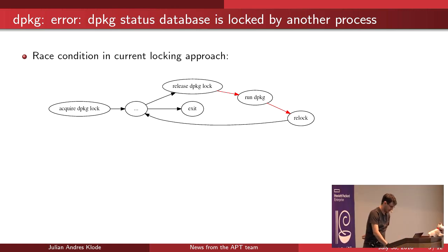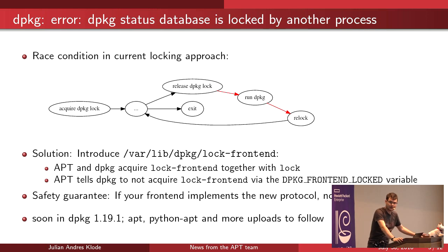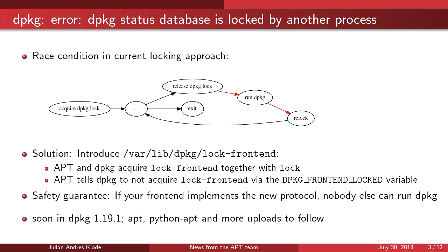The solution is to introduce another lock file: the frontend lock. Apt and dpkg both acquire the frontend lock normally. But if dpkg is run by apt or another frontend implementing this, apt tells it not to acquire the frontend lock. So apt will always keep the frontend lock locked, and dpkg will lock its normal lock. If you want to run dpkg in parallel in another app or on your own, dpkg will notice that the frontend lock is still held by apt and will not run.